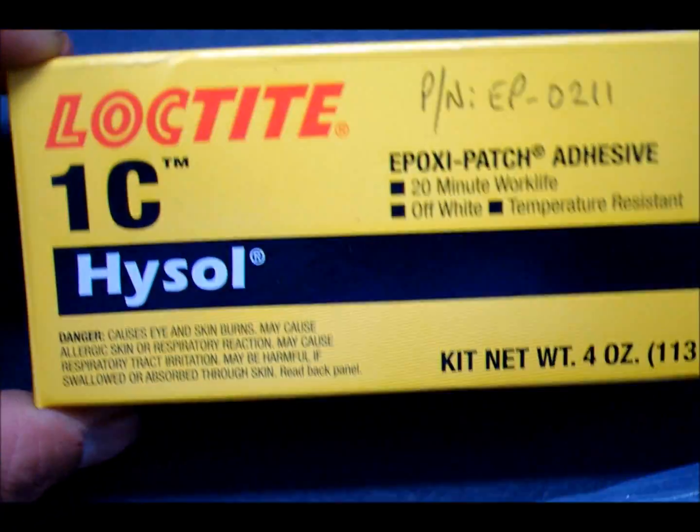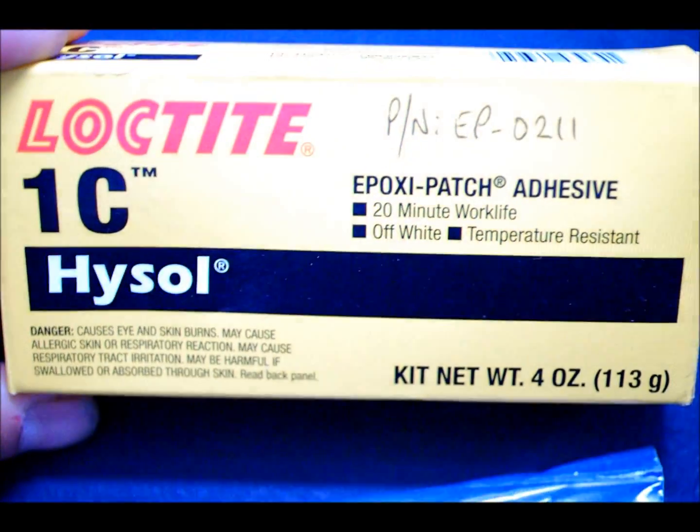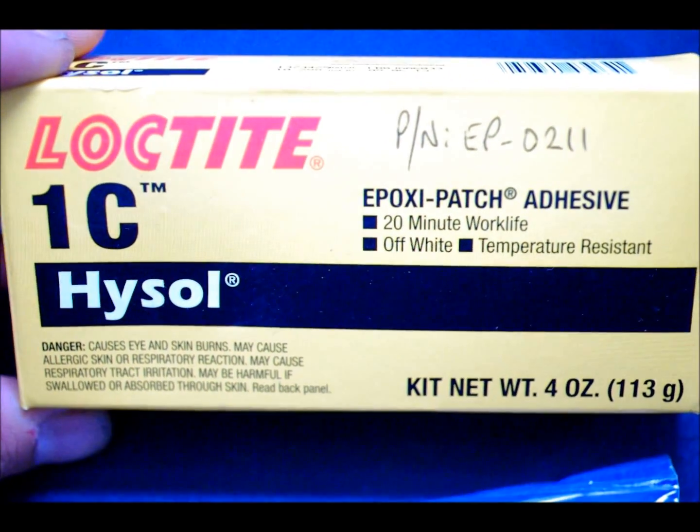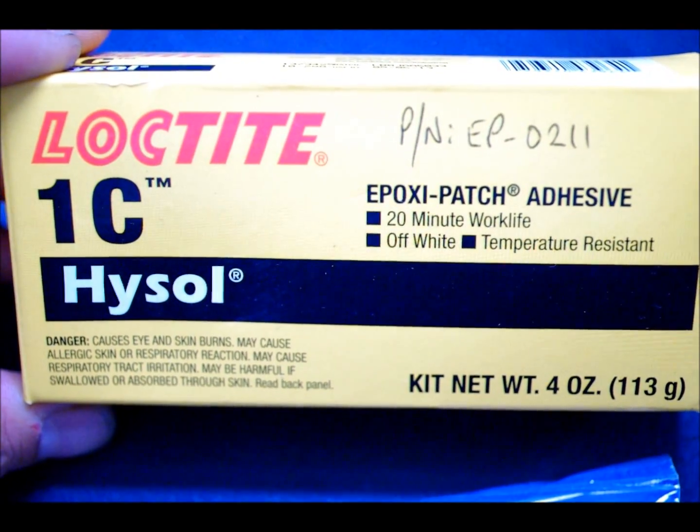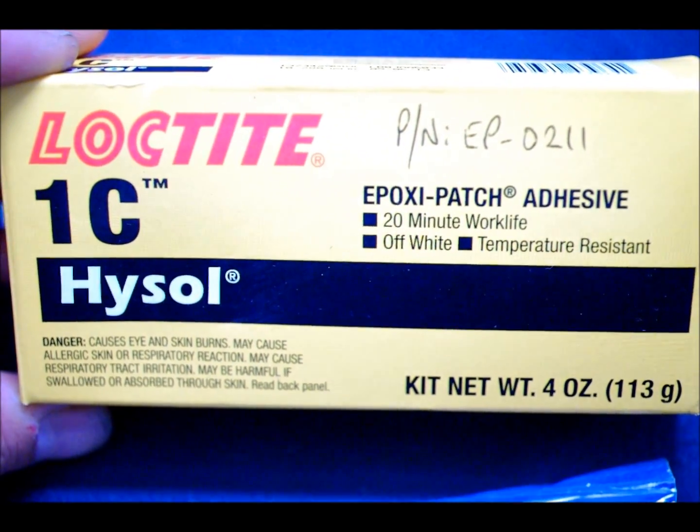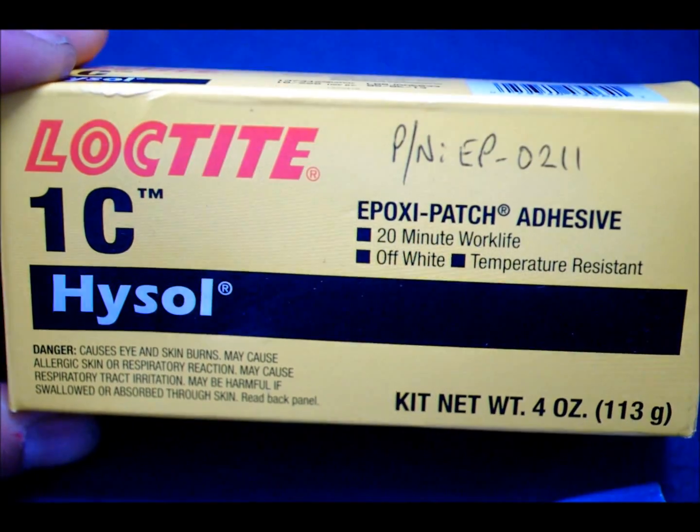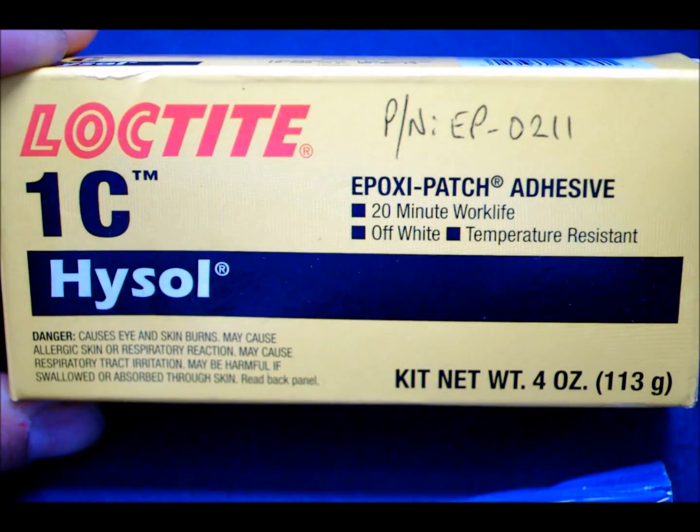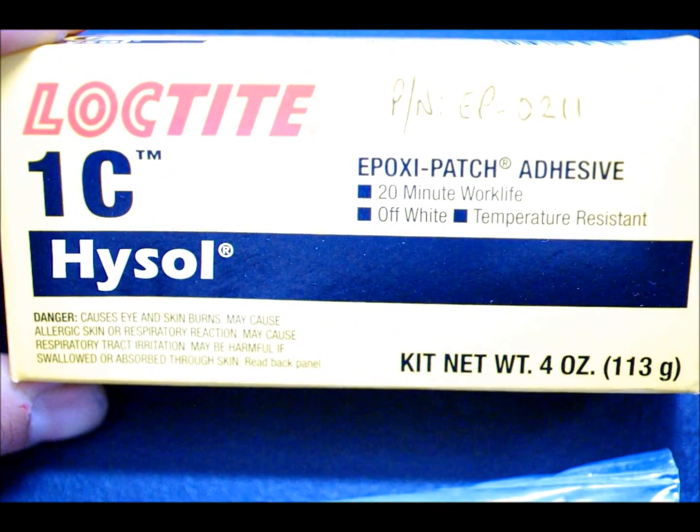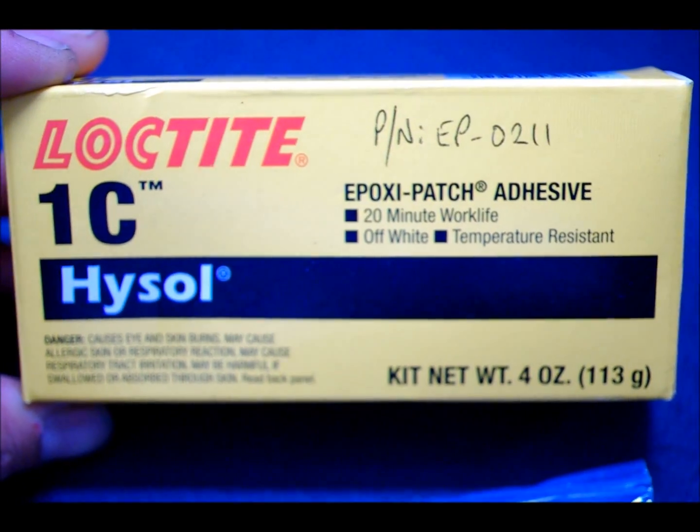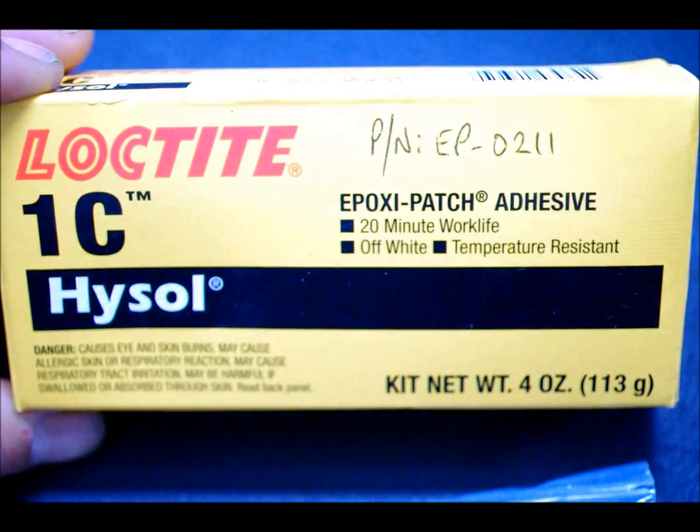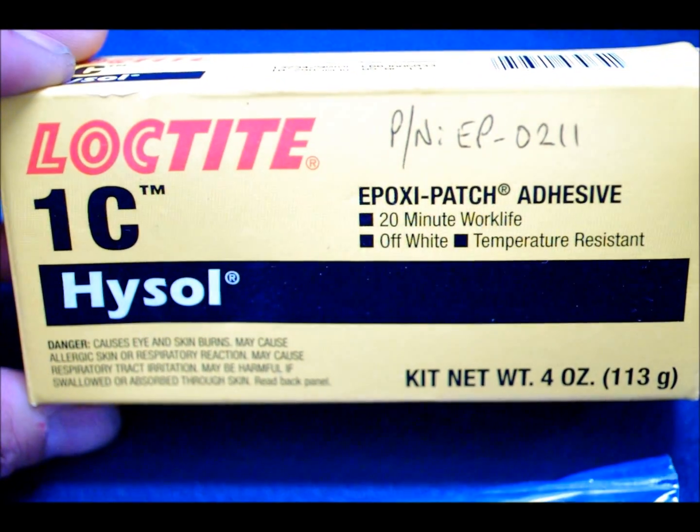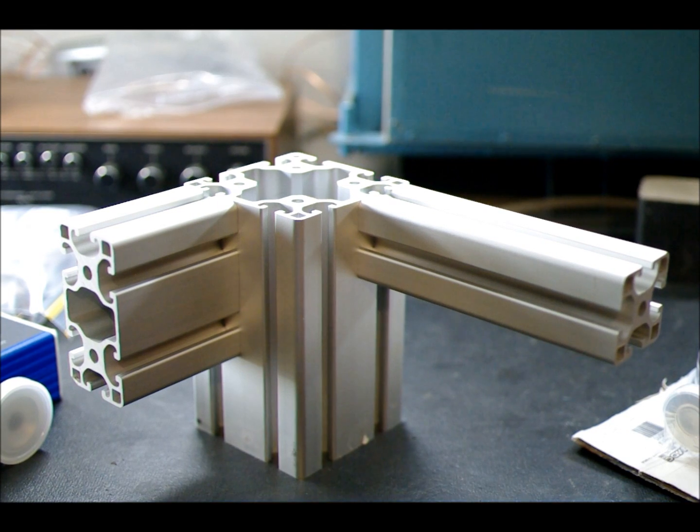The last thing I wanted to show you is this Loctite 1C Hysol. This is really good stuff for vacuums. This is what we'll be using to make our disposable, cheap, expendable vacuum chambers that we connect to that KF16 valve we talked about earlier. If we want to make something quick and cheap, a custom chamber for a certain experiment, we can glue it together with this Loctite 1C Hysol.